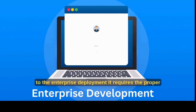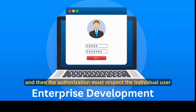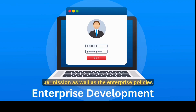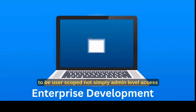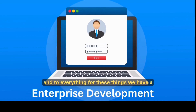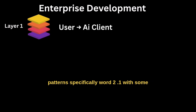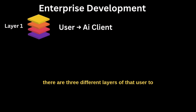When it comes to enterprise deployment, it requires proper authentication of the AI client to the MCP server, and then authorization must respect individual user permissions as well as enterprise policies. Downstream services access needs to be user-scoped, not simply admin-level access to everything. For these things, we have a robust solution — it leverages battle-tested OAuth patterns, specifically OAuth 2.1 with some modern twists designed for AI agent scenarios.